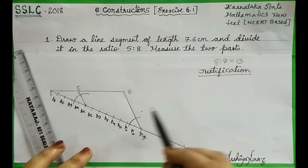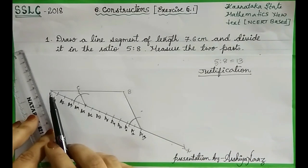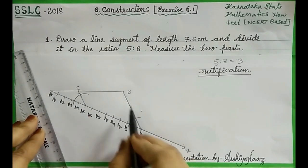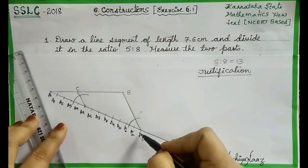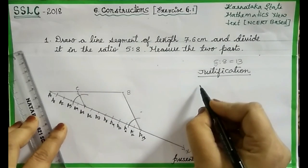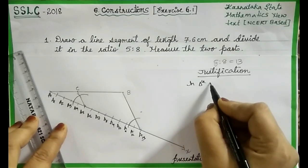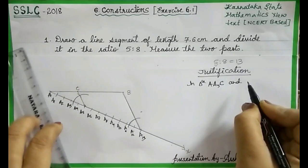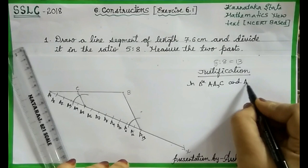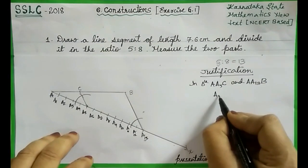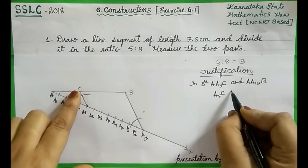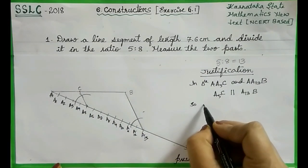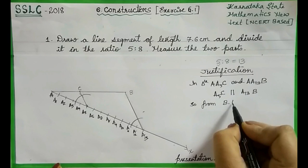Now let us justify this construction. In triangle AA5C and AA13B, A5C is parallel to A13B. So from the basic proportionality theorem we can write: AC by CB is equal to AA5 by A5A13.